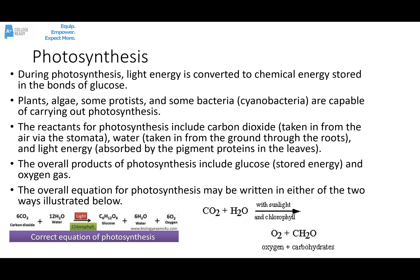The reactants for photosynthesis include carbon dioxide, which is taken in from the air usually through the stomata; water, which is taken in from the ground usually through the roots; and light energy, which is absorbed by the pigment proteins, which are usually located in the leaves.